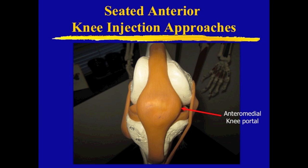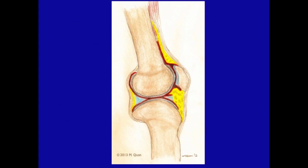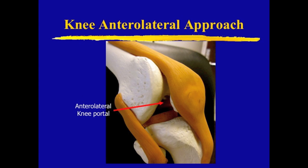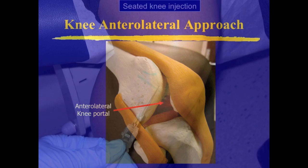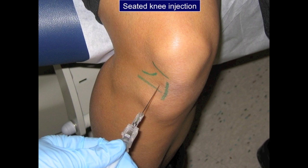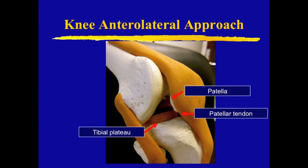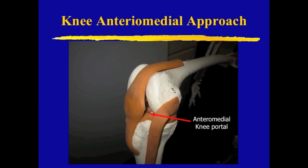If you choose the seated position you have a choice between the anteromedial and anterolateral approaches. However, since the anterior fat pad tends to be thicker on the medial side, I usually will do an anterolateral approach if using the seated position. Start by finding the anatomical landmarks: the lateral soft spot of the knee, bounded in clockwise order by the inferior patella, the patellar tendon, the tibial plateau, and the femoral condyle.